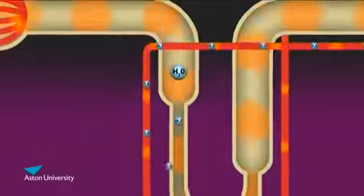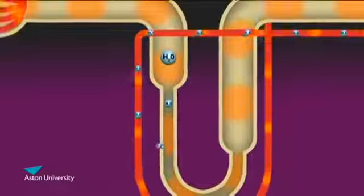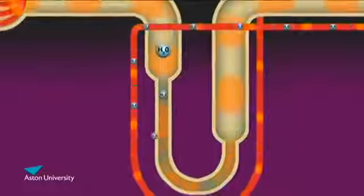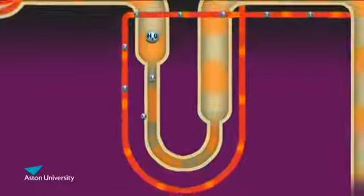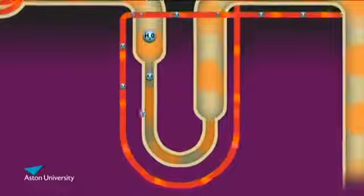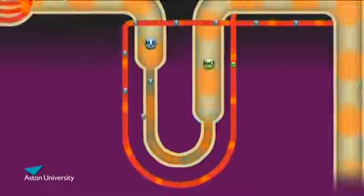This entry of water into the ascending vasa recta reduces the osmotic potential of the blood to normal as it returns to the body. The interplay between the loop of Henle and the vasa recta is called the countercurrent multiplier.